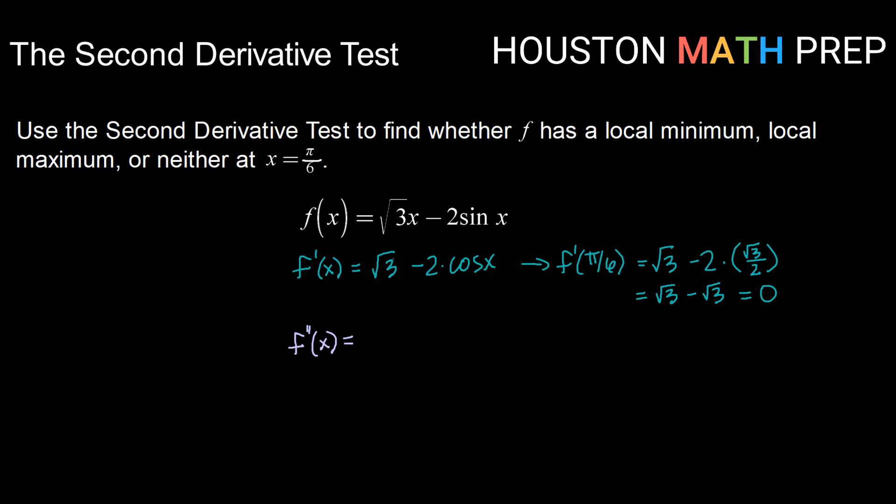Okay, so for our second derivative, derivative of root 3 is zero. So we'll bring that minus 2 times the derivative of cosine x is minus sine x. So overall, we have a positive 2 sine x. Now evaluating that at pi over 6, we get 2 times the sine of pi over 6 is 1 half and 2 times 1 half is 1. 1 is certainly greater than zero or positive.